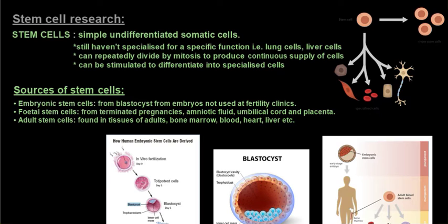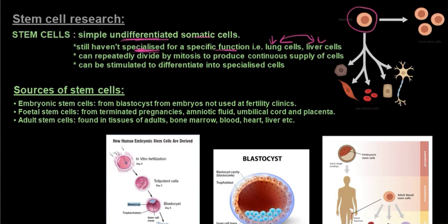Stem cells are undifferentiated somatic cells — body cells. Undifferentiated means these cells have not yet specialized for a specific function; they have not yet become lung cells or liver cells. You can't have a lung cell in a liver — those organs won't perform their function if the cells haven't specialized. Stem cells can repeatedly divide by mitosis making many more stem cells, providing a continuous supply. They can then be stimulated to differentiate into specialized cells such as muscle cells or nerve cells.